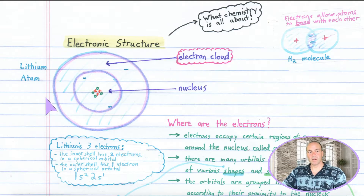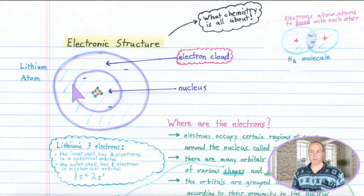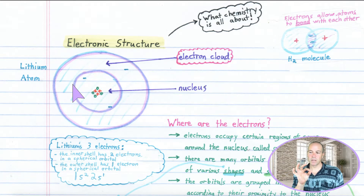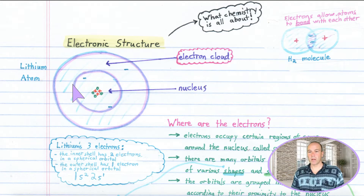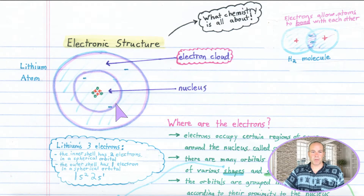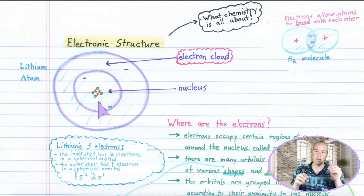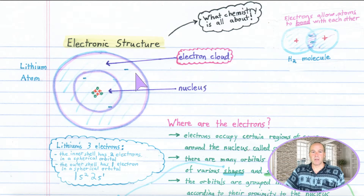Let's recall the atomic structure that we discussed before. Atoms are composed of protons, neutrons, and electrons. The protons and the neutrons are the heavy particles that occupy the tiny nucleus. But the electrons occupy a very large region surrounding the nucleus that we called the electron cloud. It turns out that the electrons are not just randomly dispersed throughout the electron cloud — they have a certain arrangement that's very important. In fact, the electronic structure of the atom is really what chemistry is all about.